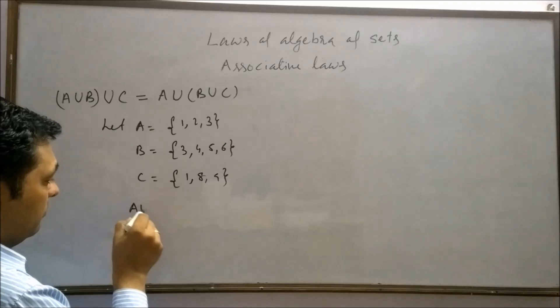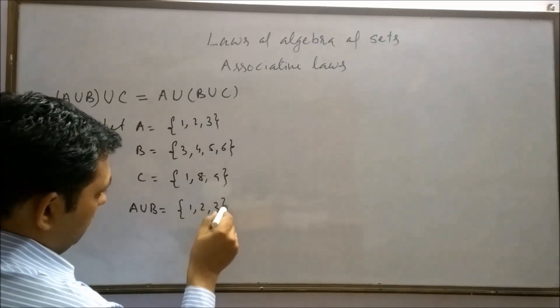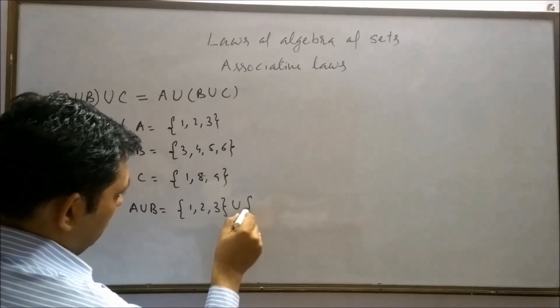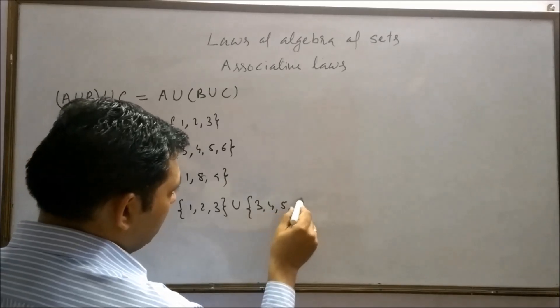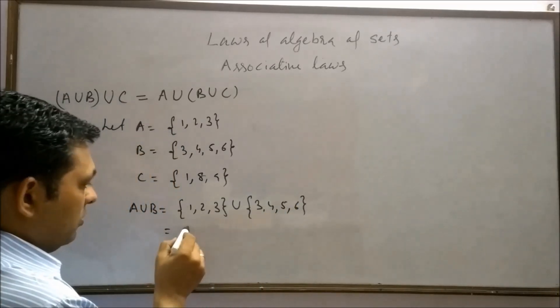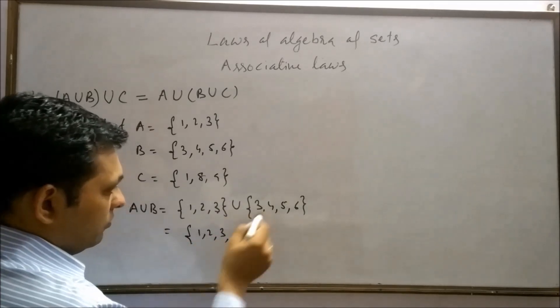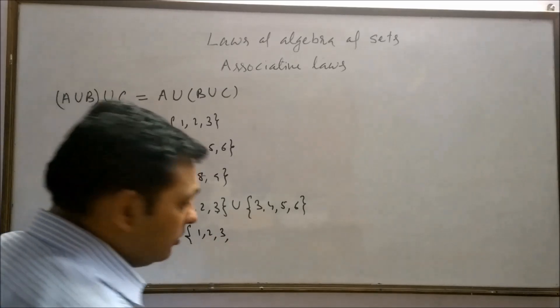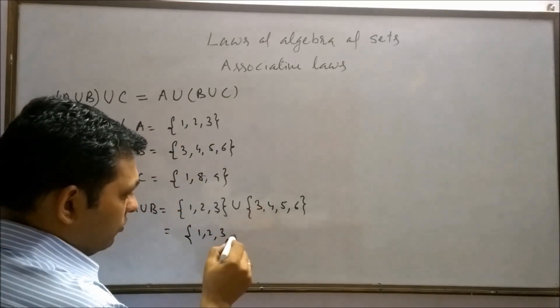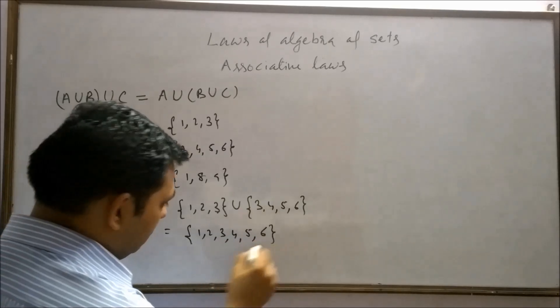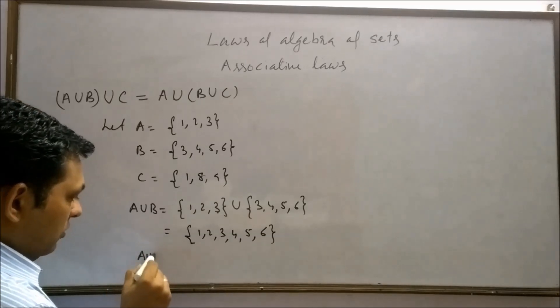A union B means set B is here 3, 4, 5, 6. 1, 2, 3 is common. So 3 can be written one time: 4, 5, 6.